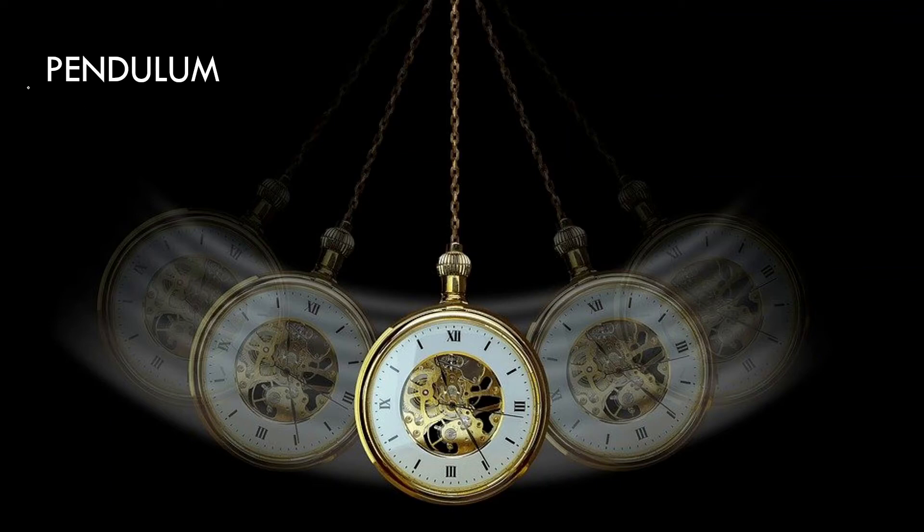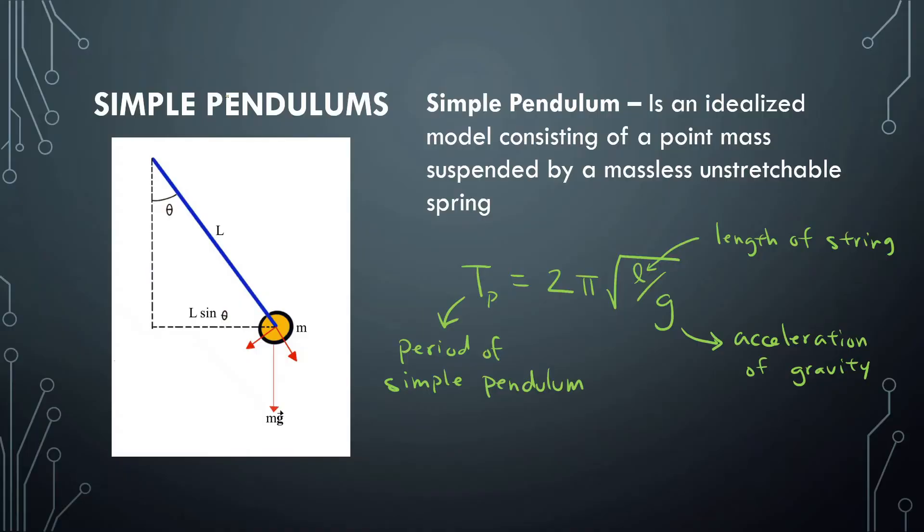Hi everyone, welcome back to Simple Harmonic Motion. Today we're going to be talking about simple pendulums. A simple pendulum is an idealized model consisting of a point mass suspended by a massless, unstretchable string. This is the formula for a simple pendulum: period is equal to 2π times the square root of the length of the string divided by the acceleration of gravity.